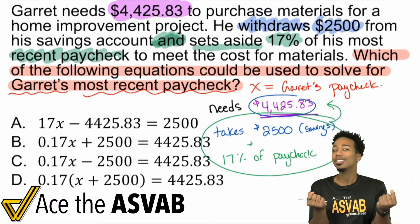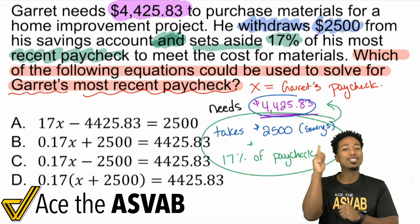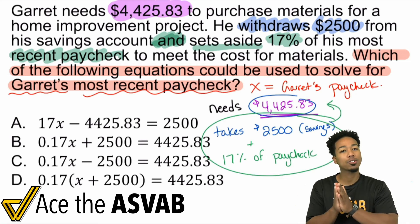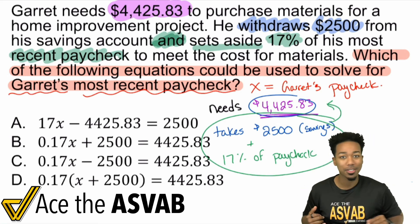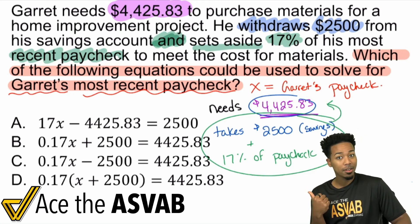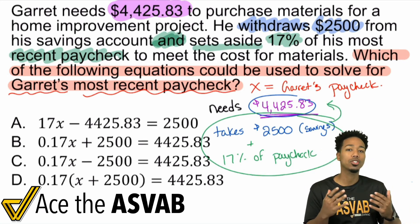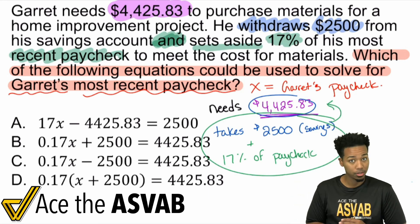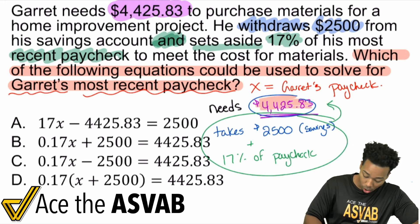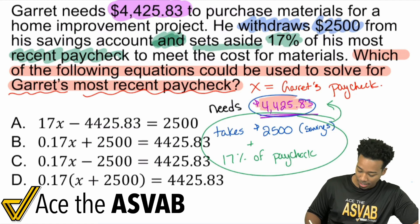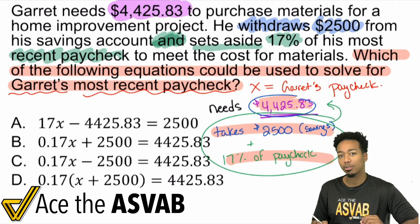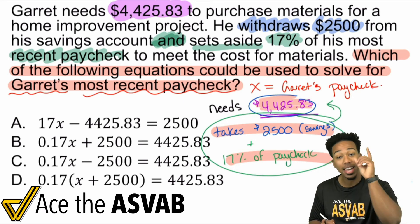Those two combined get you to the $4,425.83. So the goal is the $4,400, and we get there by adding the savings and the 17% of the paycheck. Too often we're fixated on one keyword — 'withdraw means subtract' — but the situation isn't about his bank account; it's about achieving $4,400. You add 17% of the paycheck with $2,500 and you get the $4,000.